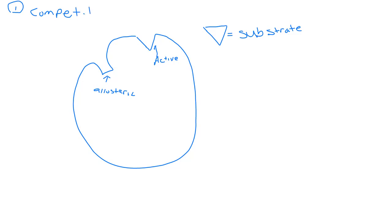The first type is going to be competitive inhibition. The reason it's called competitive inhibition is because the inhibitor is going to be competing for that active site — remember, the active site is where the reaction occurs, that is the money-making site. In order for the inhibitor to compete for the active site, it's going to have to be a similar shape to that active site because it's going to have to bind there. It could be a slightly different shape as long as it resembles the shape of the active site; it can serve as an inhibitor.